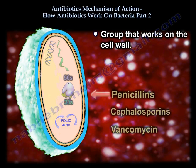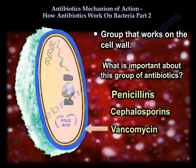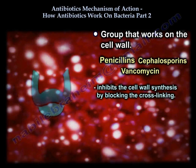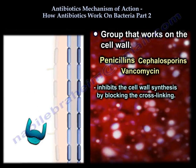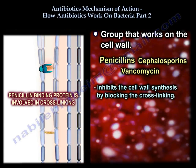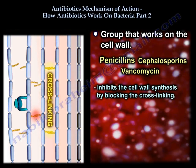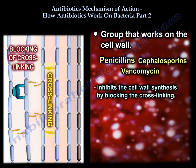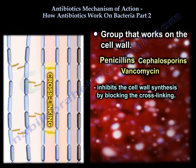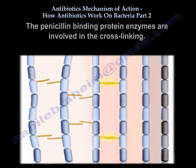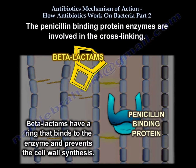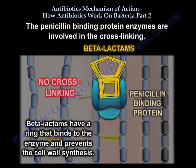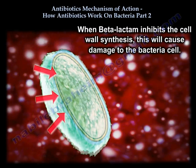Penicillin, vancomycin, and cephalosporin inhibit cell wall synthesis by blocking cross-linking. There is a protein called the penicillin-binding protein involved in cross-linking. The beta-lactam ring of penicillin and cephalosporin binds to this enzyme and prevents the cell wall synthesis by preventing cross-linking. When penicillin binds to that protein, it cannot cross-link and the cell wall will not be formed properly.